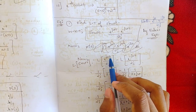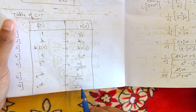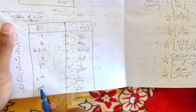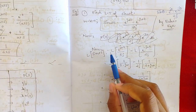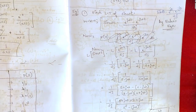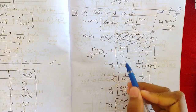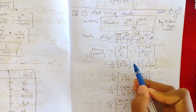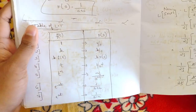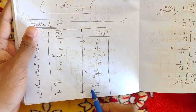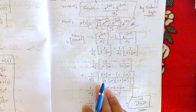For e^(jωt), comparing with the formula L{e^(at)} = 1/(s−a), we replace a with jω to get L{e^(jωt)} = 1/(s−jω). Similarly, using L{e^(−at)} = 1/(s+a), we get L{e^(−jωt)} = 1/(s+jω). So L{sin(ωt)} = (1/2j) · [1/(s−jω) − 1/(s+jω)].